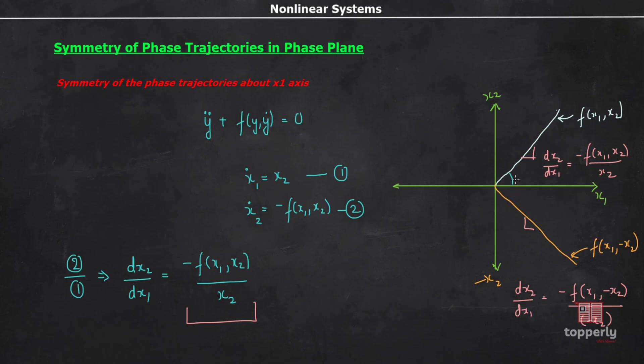That is, if the slope of this one is θ, then the slope of this one should be minus θ. For this condition to be satisfied here, f of x1 x2 should be equal to f of x1 comma minus x2. Let me show you why. For that, let us write this down again.